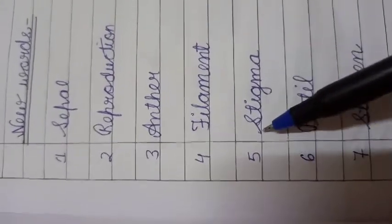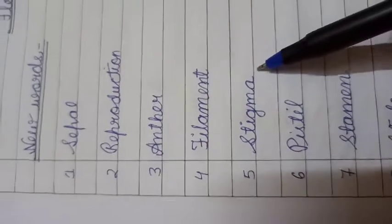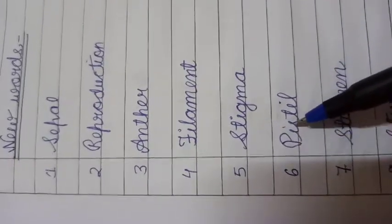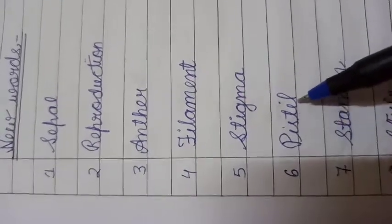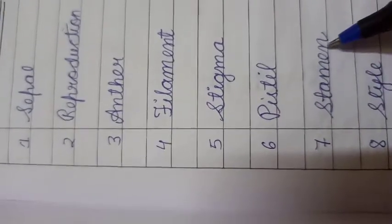Fifth is stigma, S-T-I-G-M-A, stigma. Sixth word is pistil, P-I-S-T-I-L, pistil. Seventh is stamen, S-T-A-M-E-N, stamen.